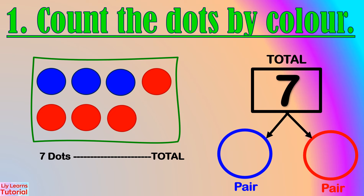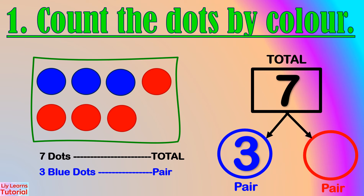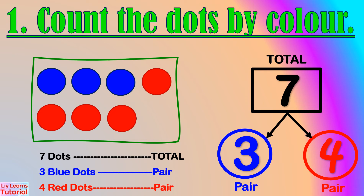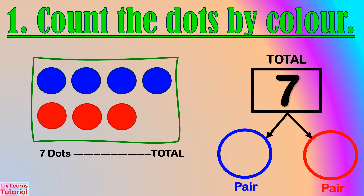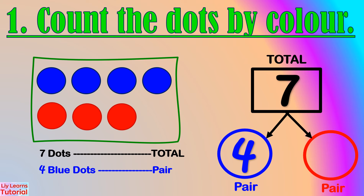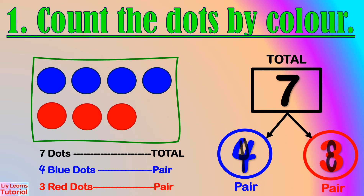Here, there are 3 blue dots and 4 red dots — the number pair is 3 and 4. Here, there are 4 blue dots and 3 red dots — the number pair is 4 and 3.